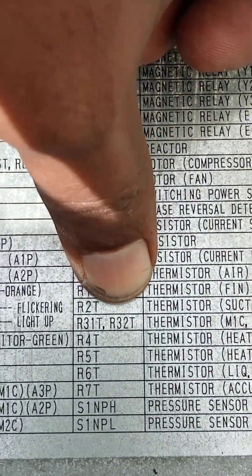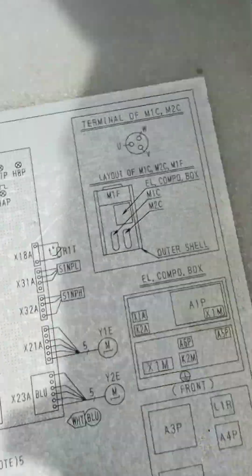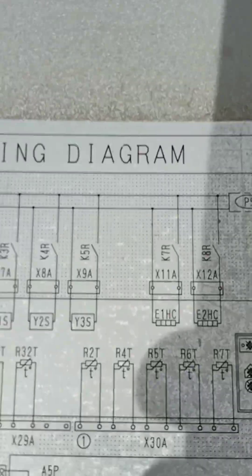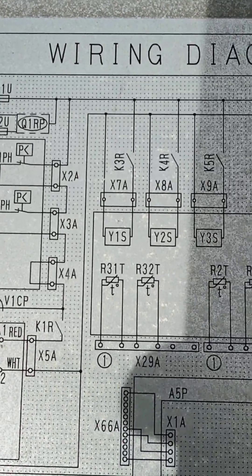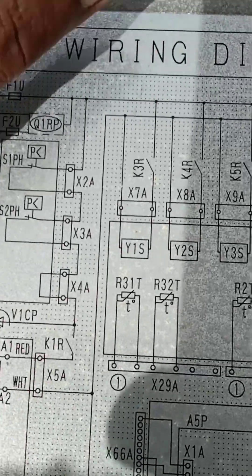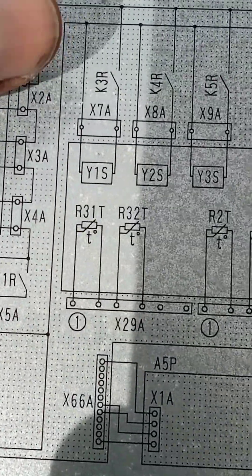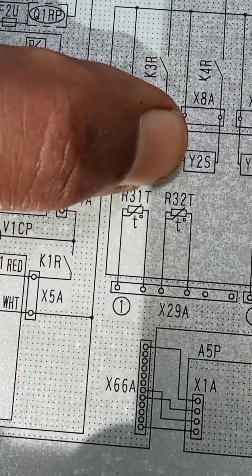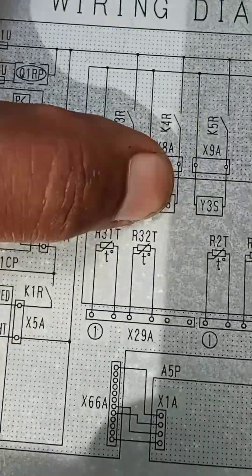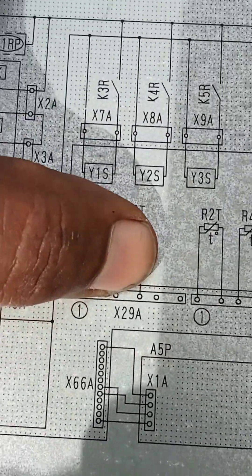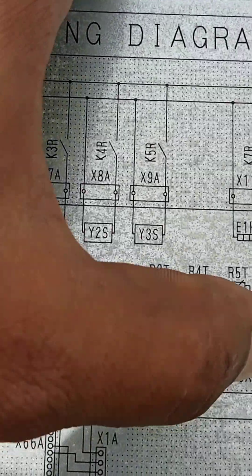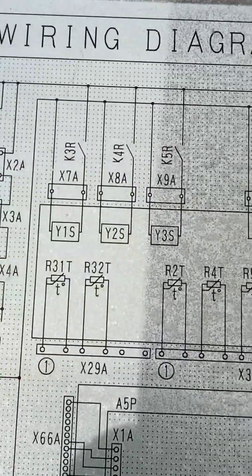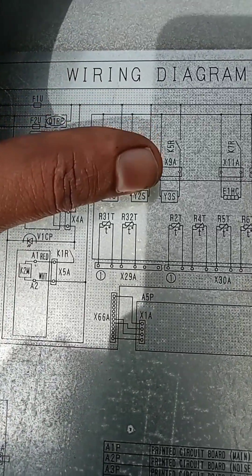After confirming R31T and R32T, we find it from the diagram. In the diagram you can see R31T and R32T. This R31T is the thermal connection from X29A, along with R23, R40, R53, R60. So R31T and R32T connect to X29A. After that we go and check.